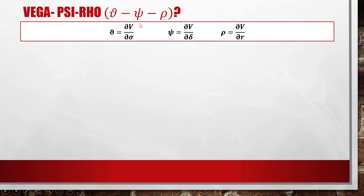Vega is delta-V over delta-sigma — the partial differential of V with respect to sigma — and measures the change in price V when there is a small change in the volatility of the underlying stock. Psi measures the change in the price when there is a small change in the dividend yield rate. Rho measures the change in V when there is a small change in the risk-free interest rate.